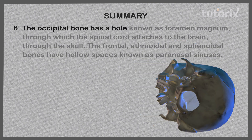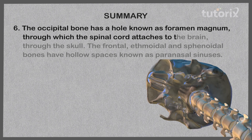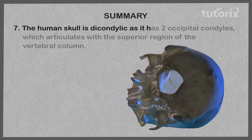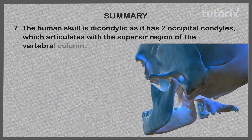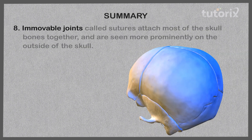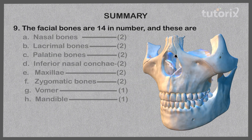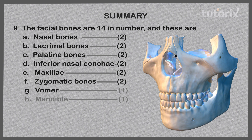The occipital bone has the foramen magnum through which the spinal cord attaches to the brain. The frontal, ethmoid, and sphenoid bones have hollow spaces known as paranasal sinuses. The human skull is dicondylic, having two occipital condyles that articulate with the superior region of the vertebral column. Immovable joints called sutures attach most skull bones together. The 14 facial bones are: two nasal, two lacrimal, two palatine, two inferior nasal conchae, two maxillae, two zygomatic, one vomer, and one mandible.